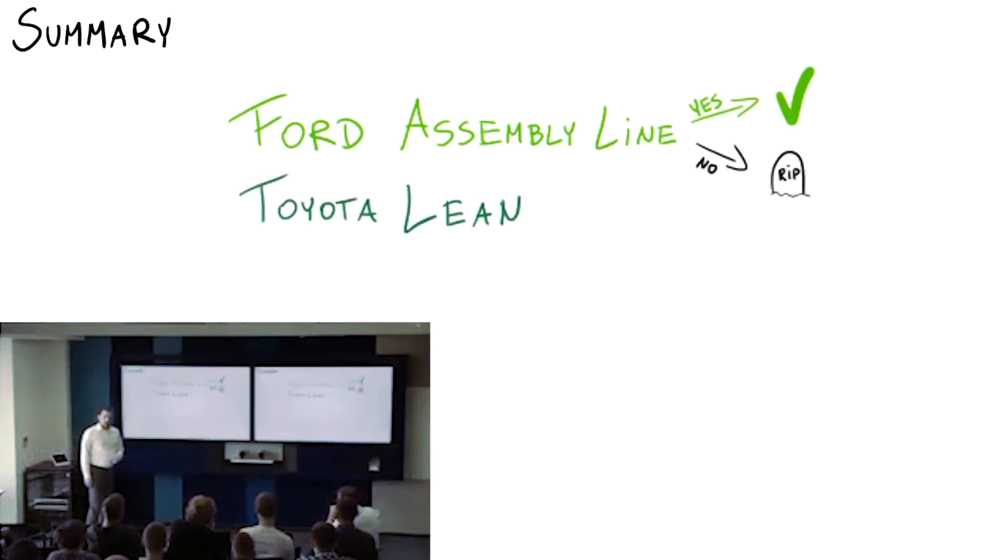Many years later, Toyota lean. The same kind of revolution. Toyota, thanks to discovering the lean manufacturing process, became the dominant car producer in the world. 10, 20 years later, guess what happened? All other manufacturers adopted or disappeared from the market, except this 1% again.